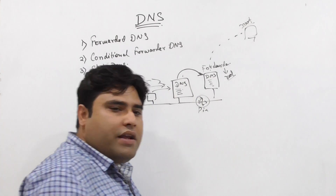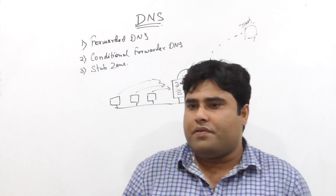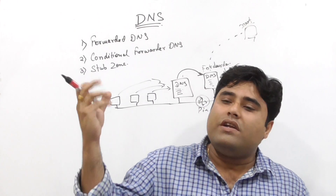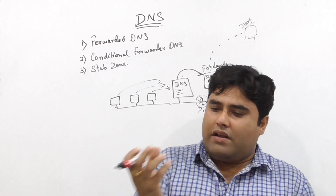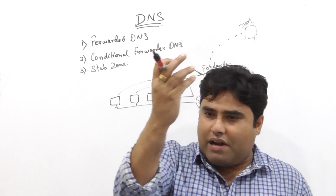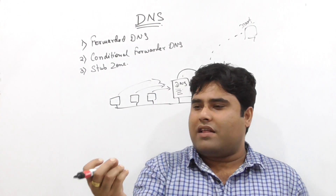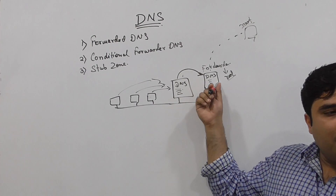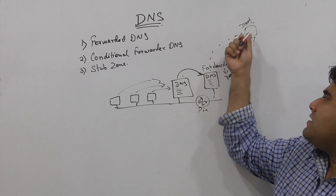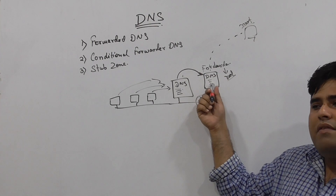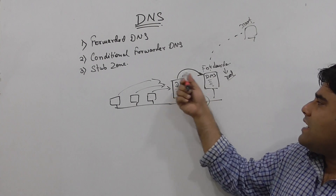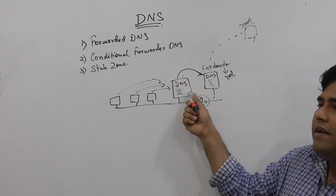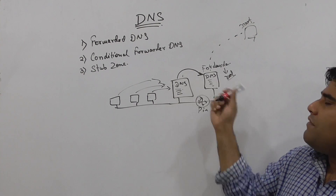The main job of a forwarder DNS server is this: instead of allowing the main DNS server to fulfill the query directly from the root internet server, we create another DNS server in between — acting as the forwarder DNS server. So our main DNS server forwards queries to this forwarder, which then communicates with the root server.